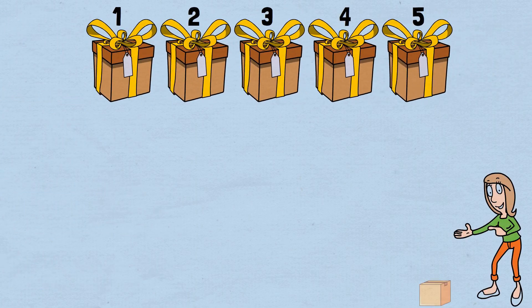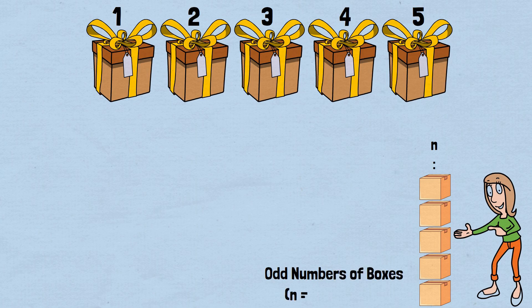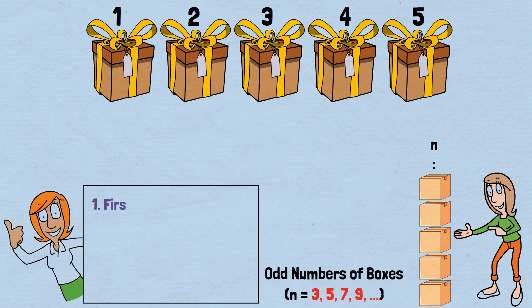The beauty of this mathematical approach extends beyond just 5 boxes. The pattern scales elegantly to any number of boxes. For odd numbers of boxes, n equals 3, 5, 7, 9, the general strategy is: 1. First search: Check boxes 2, 3, 4, up to n minus 1, all middle boxes in order.